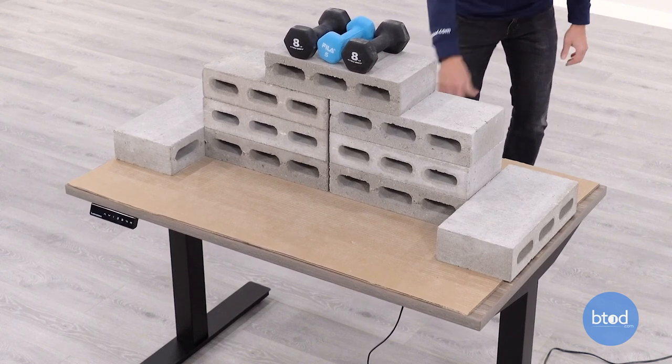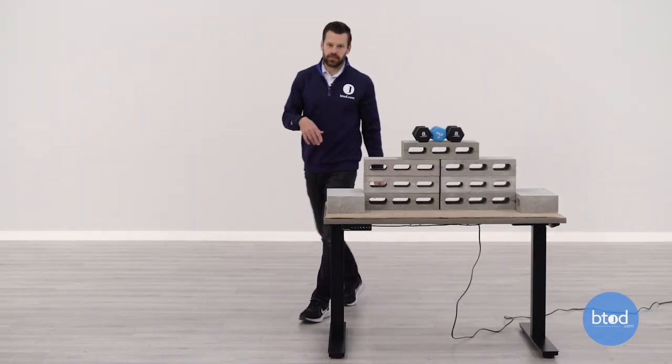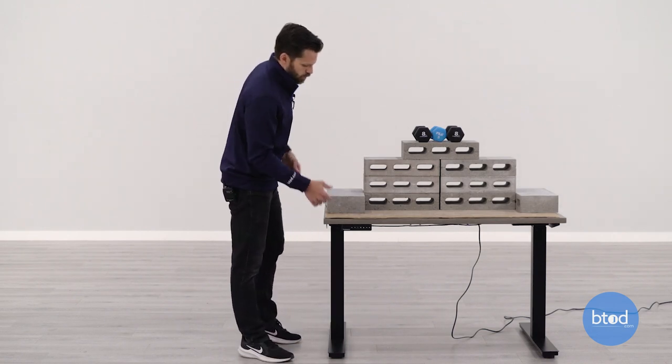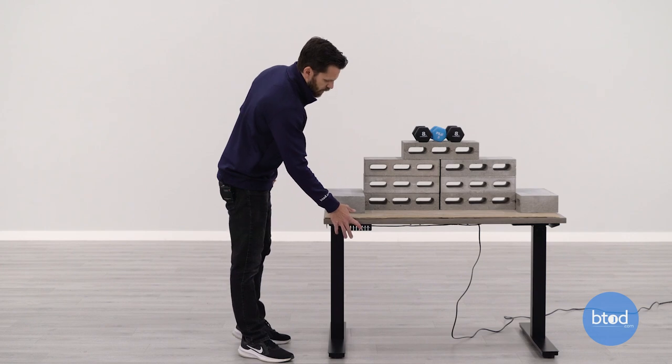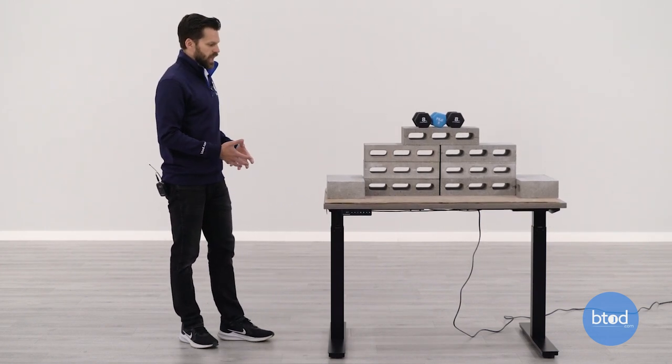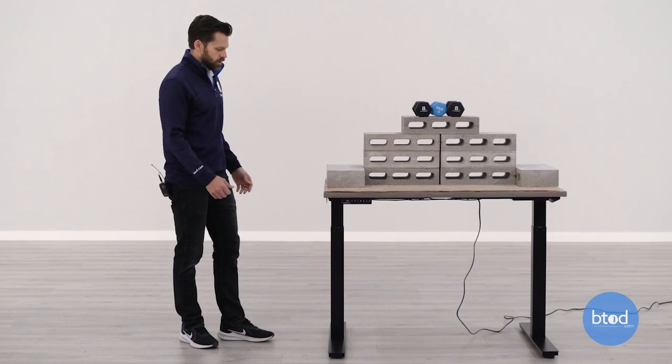that's never a good sign. And we know through the other tests that that is where it was its weakest, was that front to back rocking. We'll take it up to 39 inches. I imagine that's going to get even more exaggerated, especially with 300 pounds on the surface.